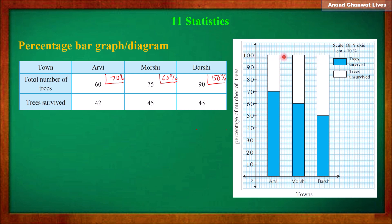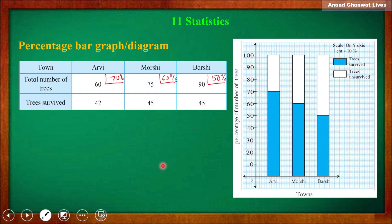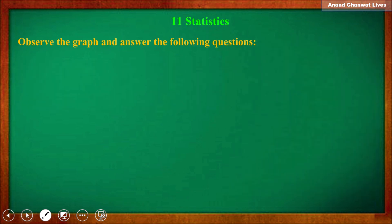There are two parts shown in this bar: trees survived in blue color and trees unsurvived in white color. Percentage of trees survived in RV is 70%, in Morshi is 60%, and in Barsi is 50%. In this way we can draw and easily understand what a percentage bar diagram or graph is.